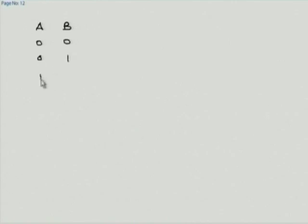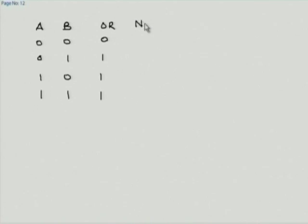Let us write down the truth table for NOR. The four combinations of A and B remain. The OR of A and B says that if either A or B or both are 1, the output must be 1; if both are 0, output is 0. The corresponding NOR is the opposite: for both inputs being 0, output is 1, and for either being 1, output is 0. This time we put the P-channel transistors in series and N-channel transistors in parallel.